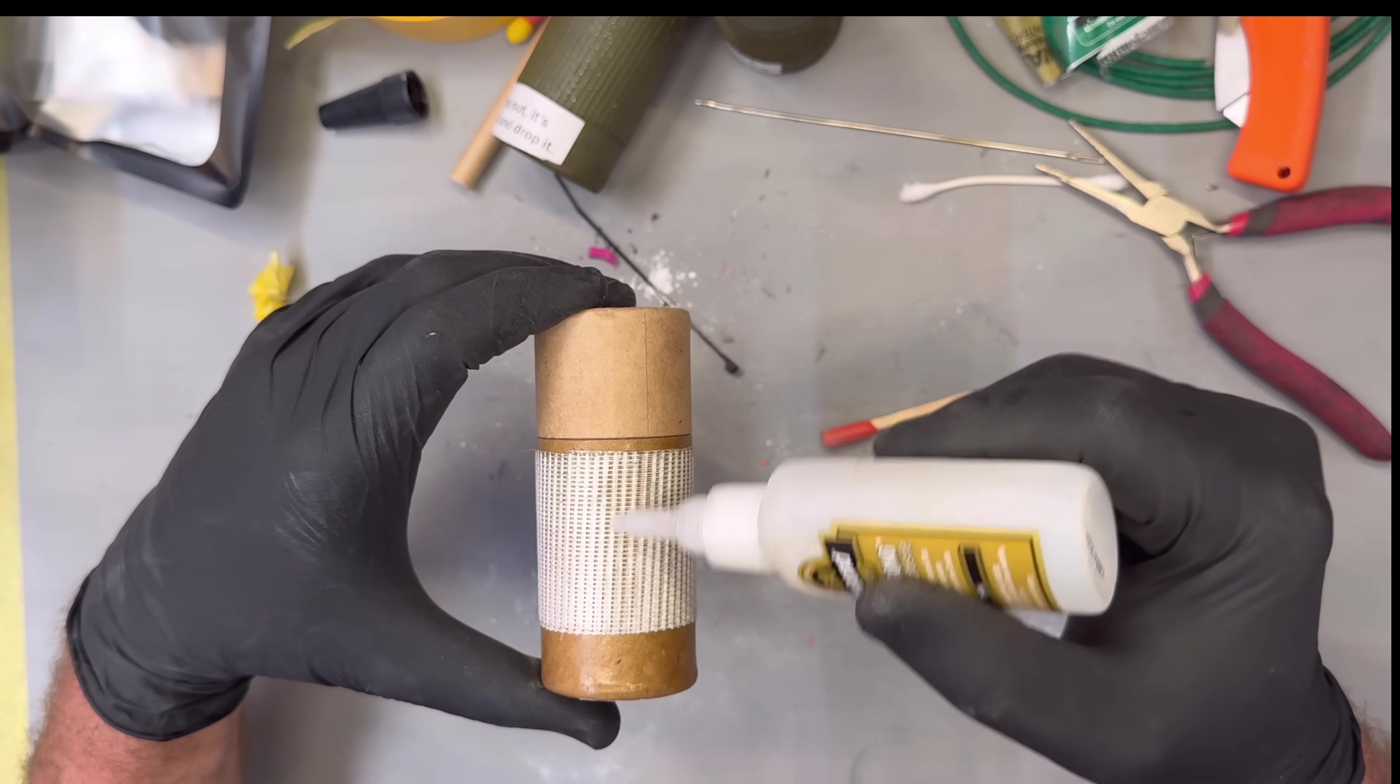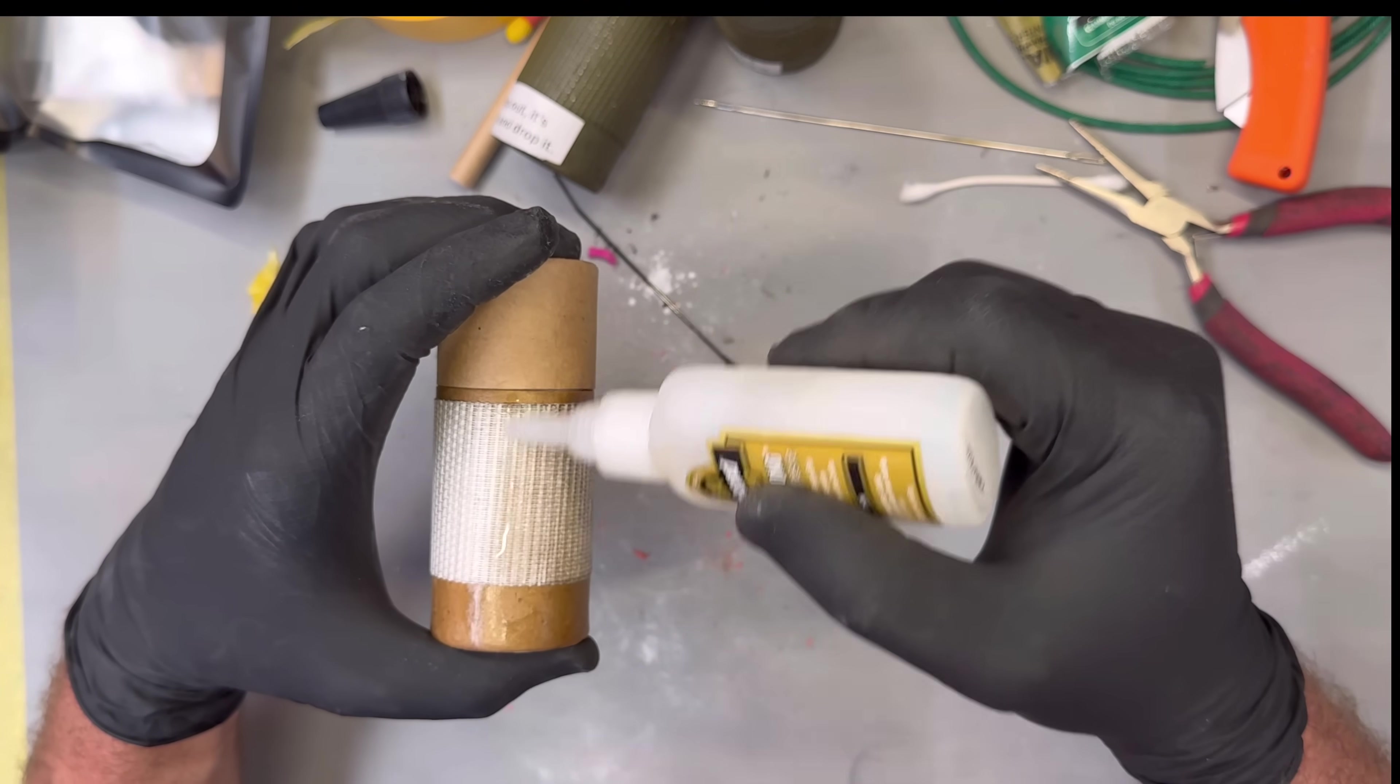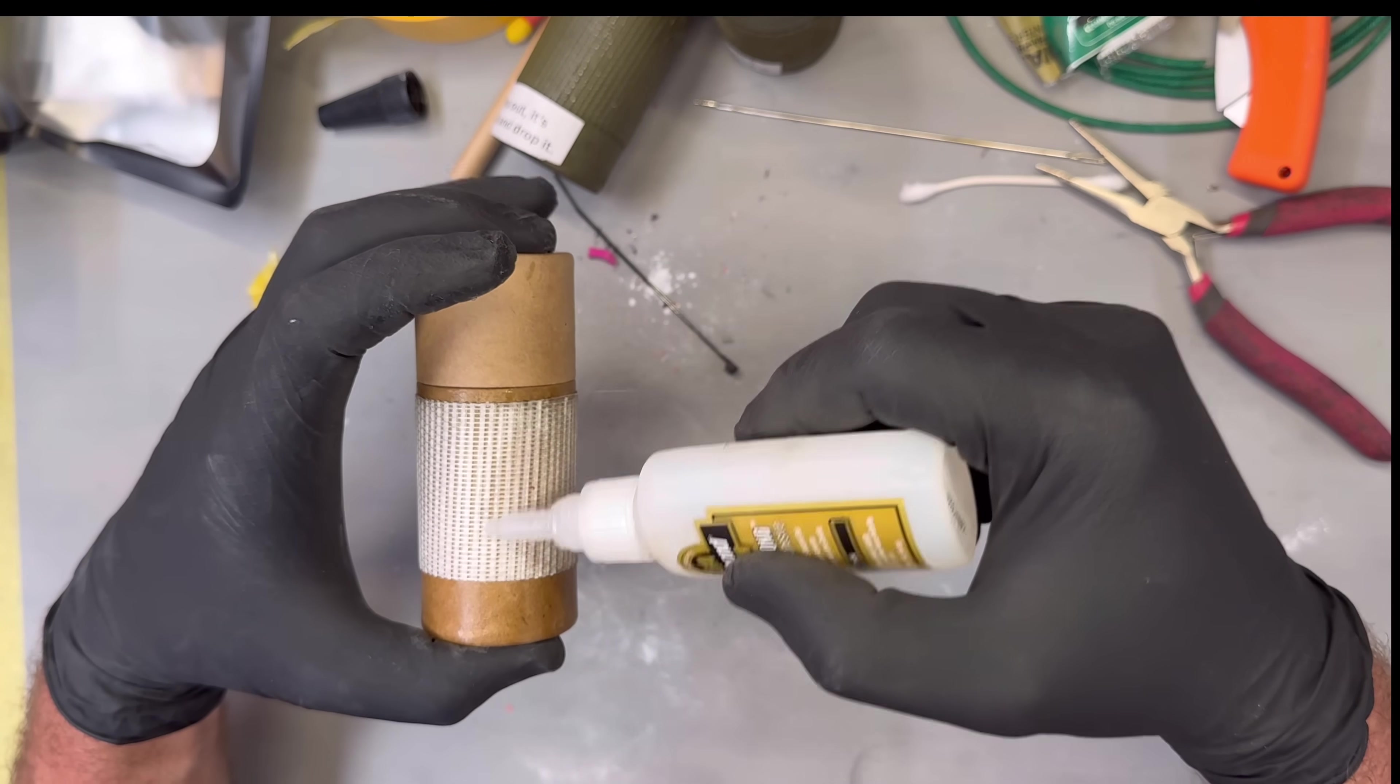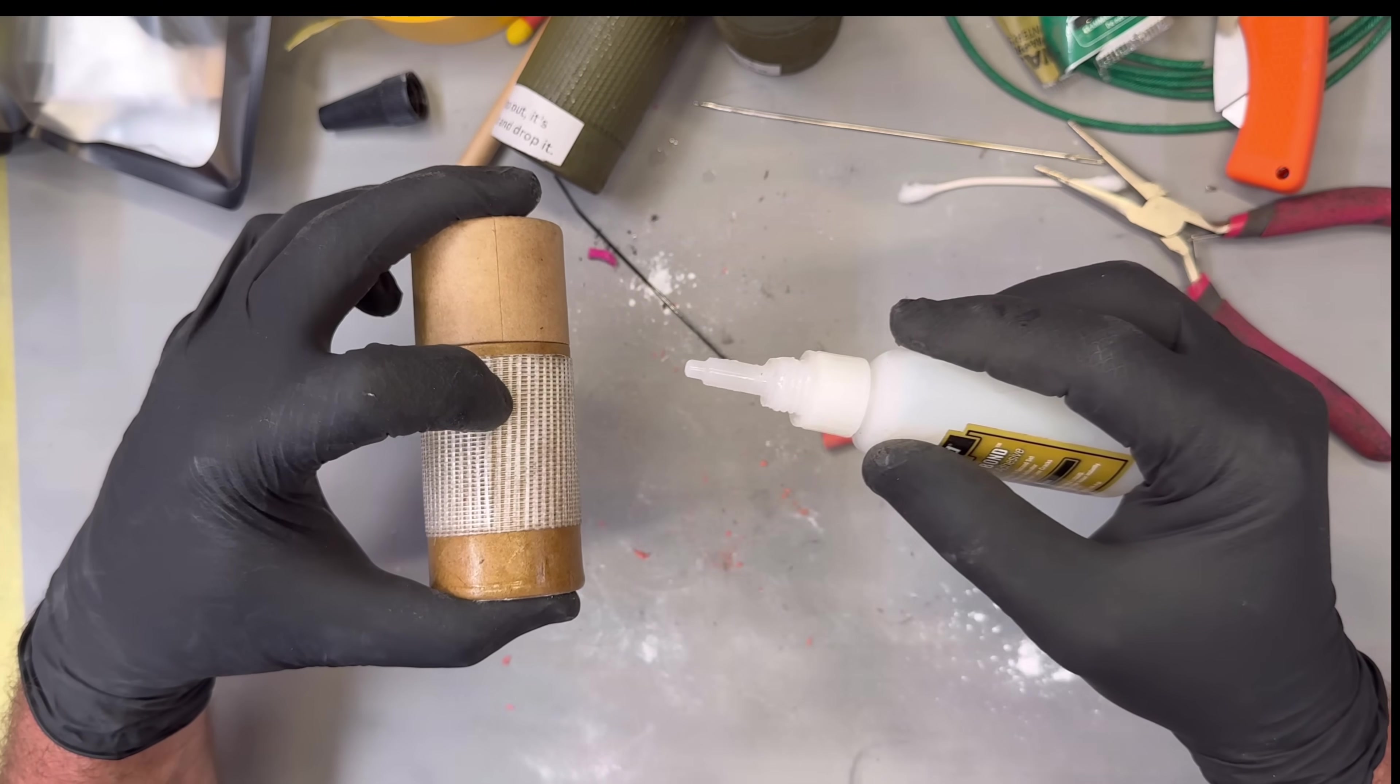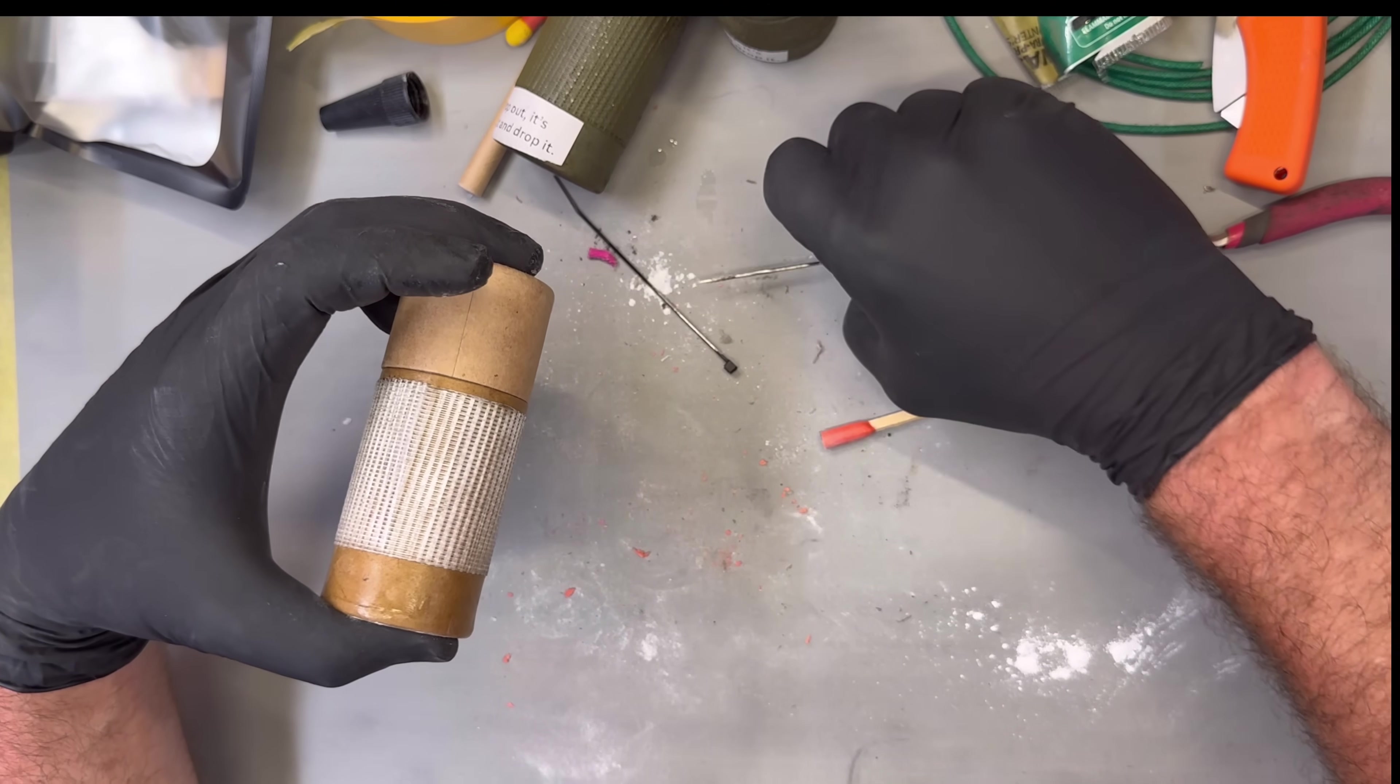I feel like I'm gonna get some of my gloves on this thing. It's gonna be stuck with the CA glue. Now I'm just adding some thin CA glue. You could use epoxy, that would be a lot more logical.